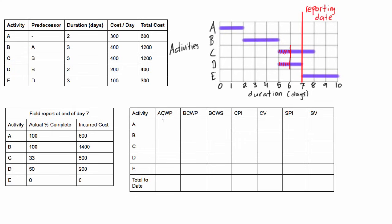Now we can fill out the table. The actual cost of work performed (ACWP) is literally how much we paid for the work done so far. Activity A incurred $600, so its ACWP is $600. Activity B cost $1,400 — we planned $1,200 but it actually cost $1,400. Activity C has incurred $500, activity D has incurred $200, and activity E hasn't started so it's zero.